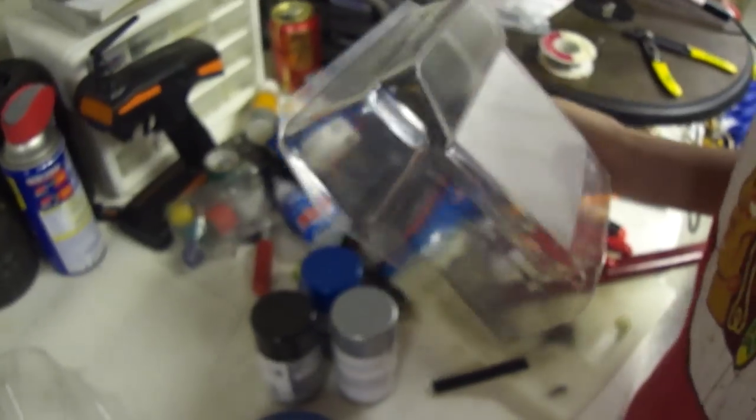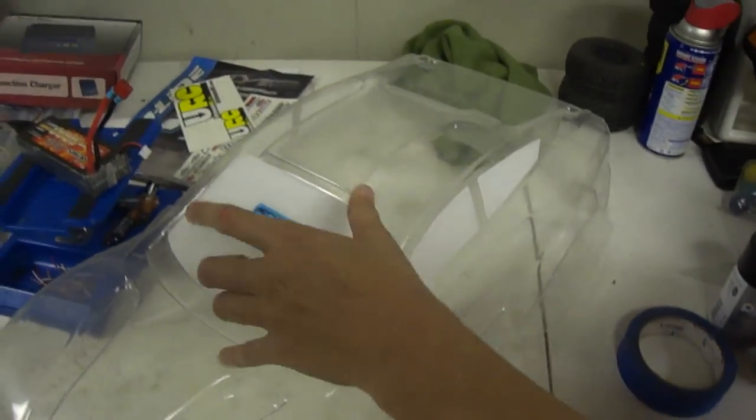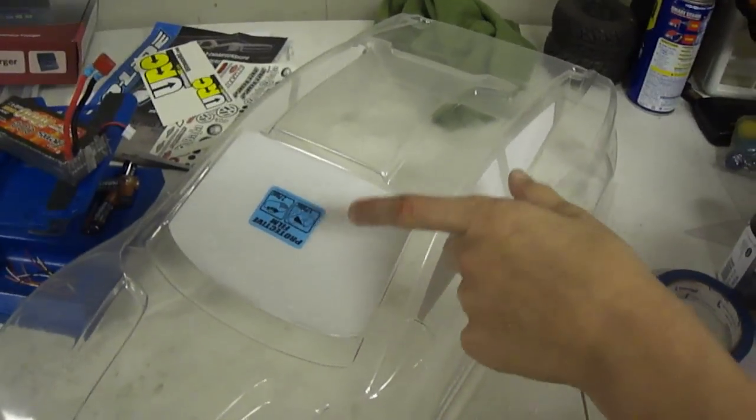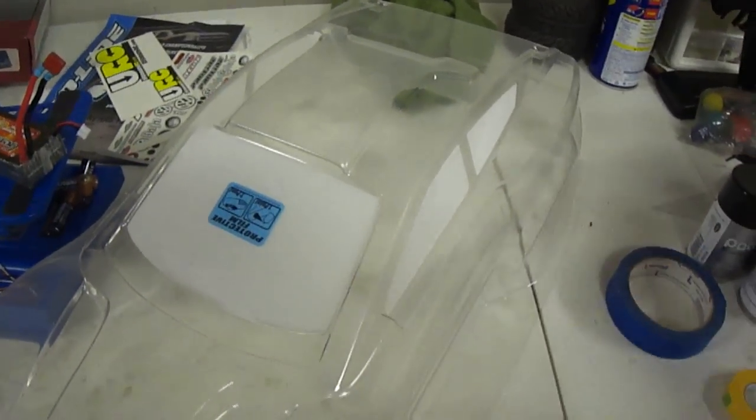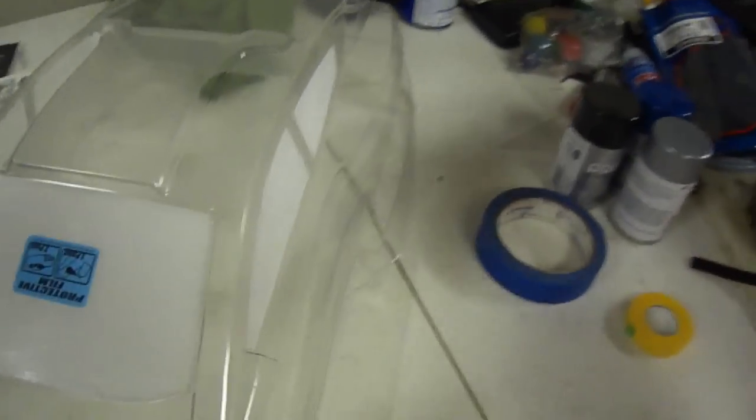Well, this is part 2 and we got the body all washed. We got it window masked, I was just spacing out there. And we masked the hatch too and cut it off. We're going to paint the hatch right now.